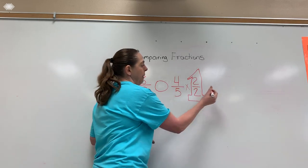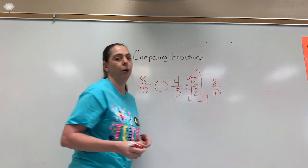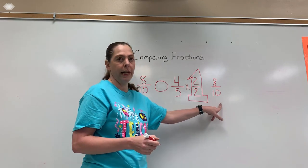5 times 2 becomes 10. 4 times 2 becomes 8. And we've now created an equivalent fraction. Four-fifths is equal to 8 tenths.